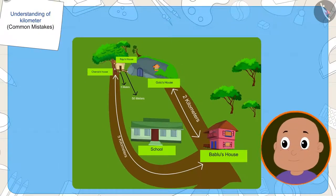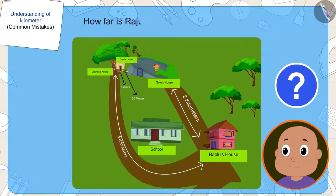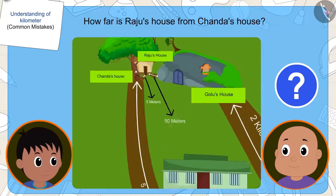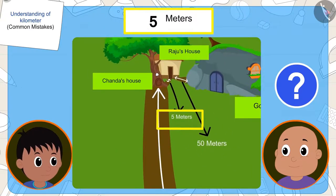Then, Bablu asks him, how far is his house from Chanda's house? Raju said, at a distance of five meters.